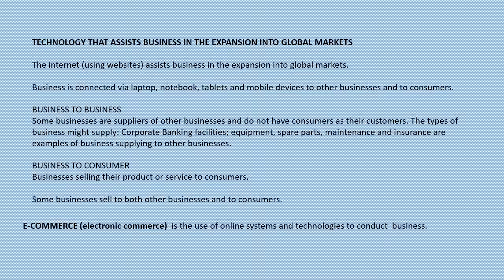So how do individual businesses use technology between each other? Well, it could be to do with ordering, supplying, or feedback. It's obviously to do with communication through email, Skype, video messaging, or video conferencing. Spare parts, insurance — don't forget that while we can buy all those things online as individuals, businesses will also do the same thing.